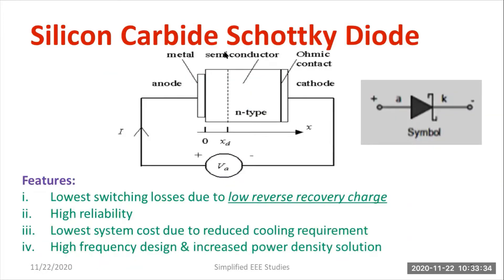As you can observe the schematic diagram of silicon carbide Schottky diode, we have n-type semiconductor material. Apart from that, we'll be fusing it with a metal junction — it may be gold or silver, Ag meaning silver. This is the ohmic contact. Then we have the anode and the cathode terminal — higher potential and lower potential. Current will always pass from anode to cathode.